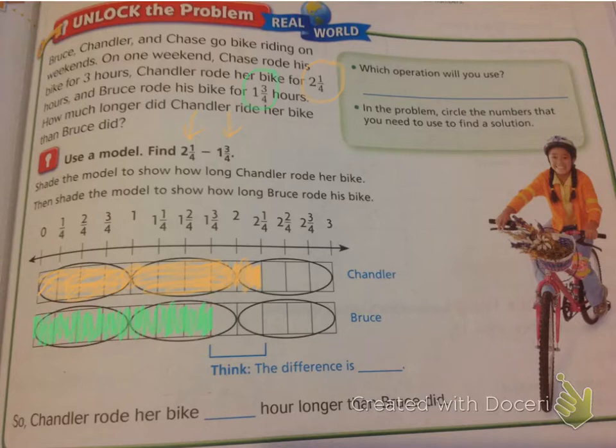Now it's asking us to think, what is the difference between 2 1/4 right here and 1 3/4? Well, I see that the difference is 2/4. Let me write that a little darker. 2/4. So Chandler rode her bike 2/4 hour longer than Bruce did.